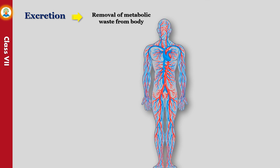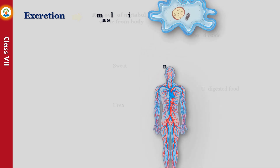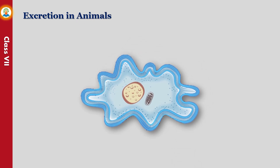Excretion is the process of removal of metabolic wastes from the body. These wastes are generated as a result of various life-sustaining activities such as respiration and digestion taking place inside the body. Carbon dioxide is a waste product produced during respiration. Undigested food, sweat, and urea are other examples of wastes. These wastes, if accumulated in the body for a long time, become harmful, so their removal is extremely important for maintaining a healthy body.